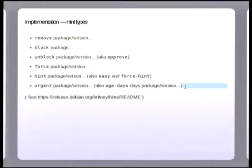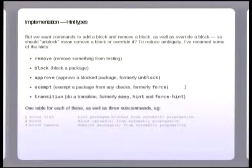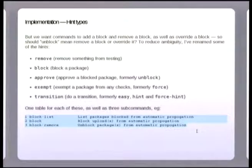So because I want to make this kind of temporal now, so I want to have you be able to introduce a block on a package, remove a block on a package, but also have the block on the package still be there but let this particular version of the package go through. I kind of decided that unblock was a little bit ambiguous - are you removing the block or are you just going straight through it? So I've kind of renamed them. The hints that I'm using are now remove, block, approve, exempt instead of force, and transition instead of hint. And so the idea then is that for each of these hint types there'll be basically three subcommands to Britint that let you list the hints that are current, that let you add a hint of that type, or let you remove a hint of that type.